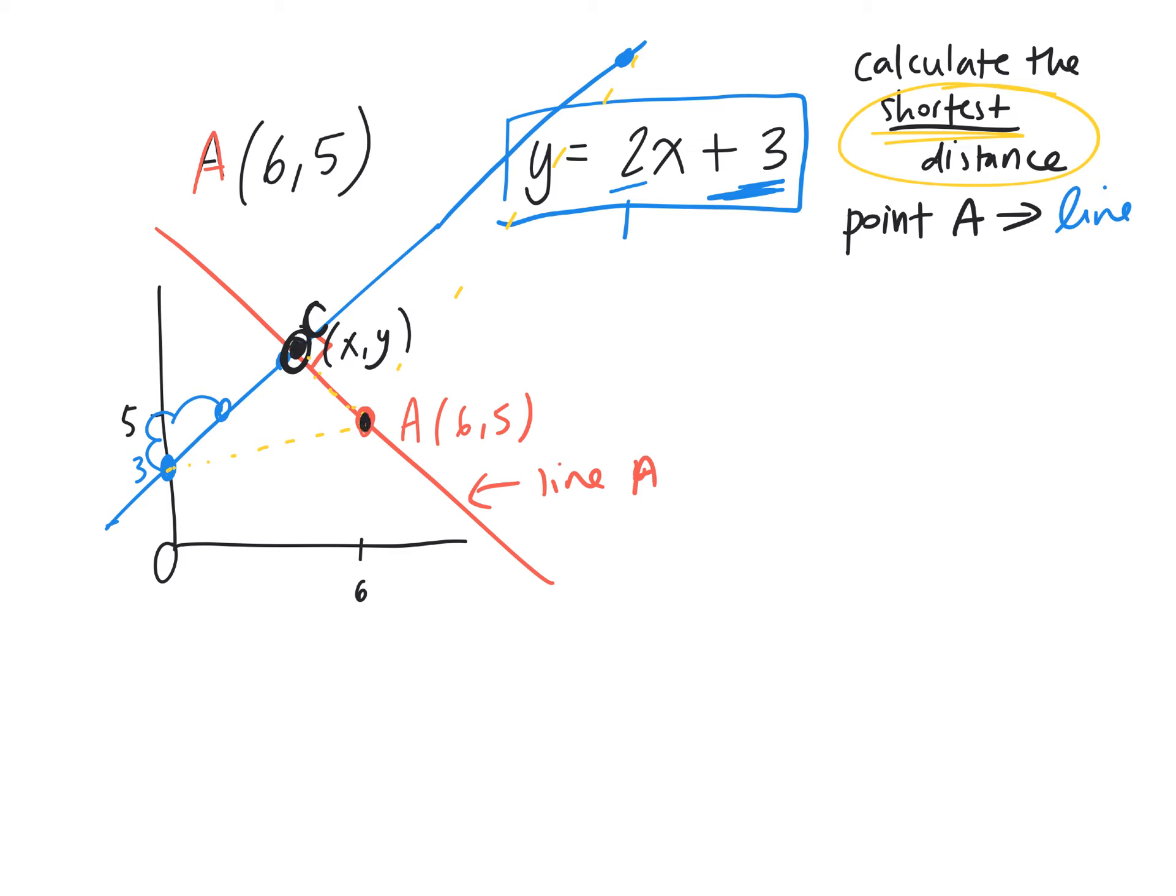Once I know this point, that length there is the shortest distance. Does that make sense? So the first thing we need to do is figure out what is the equation of line, I'm going to call this line R, the red line. We have to find the equation of line R.